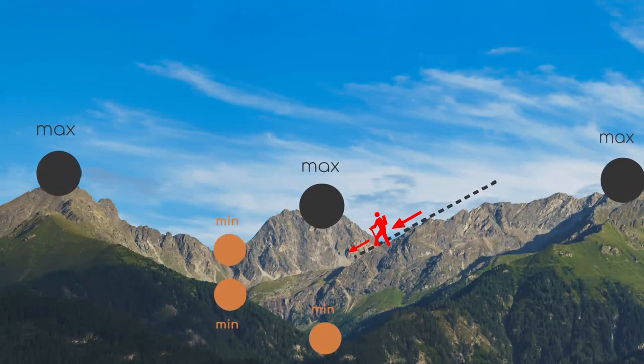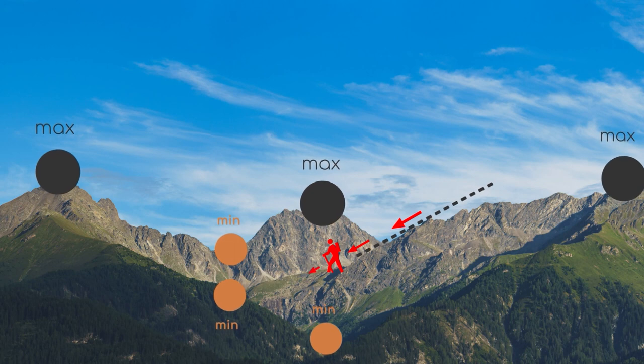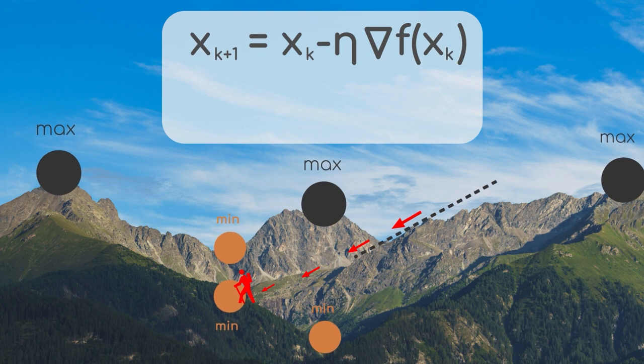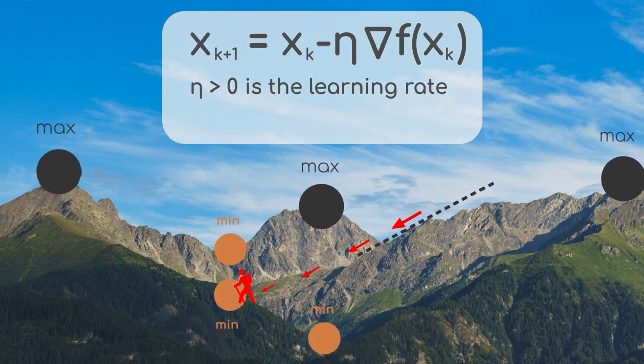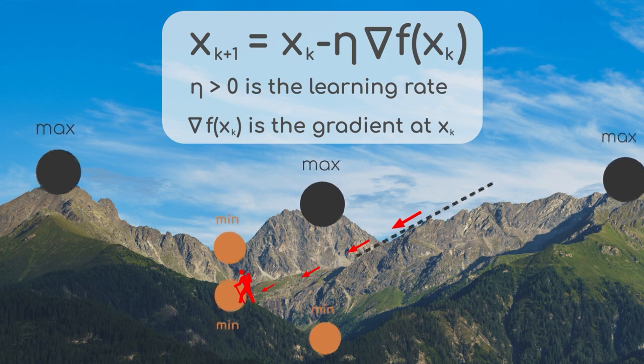In our metaphor, this would equal to climbing down the mountain to reach the valley taking the fastest route. And this will be repeated for a couple times, which finally leads us to our iterative training procedure using gradient descent.